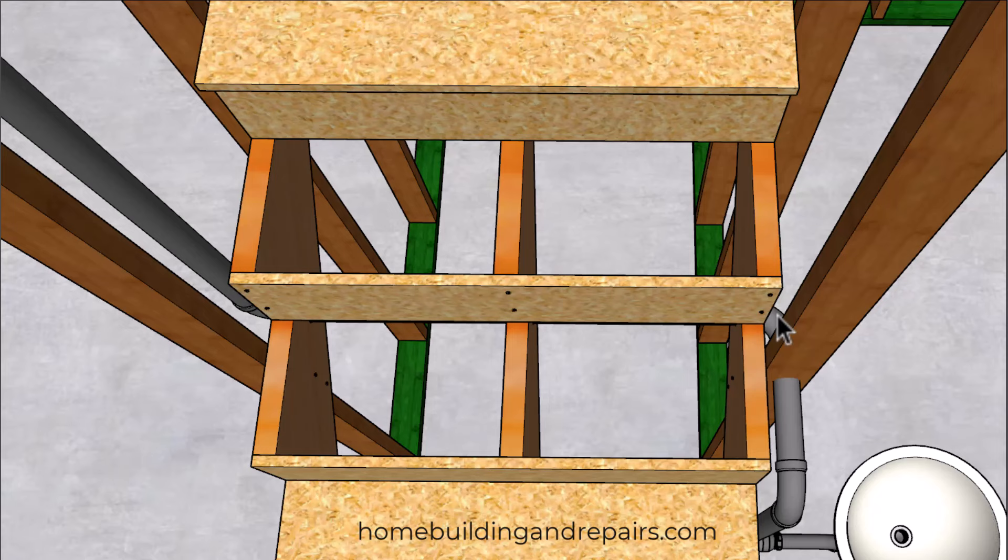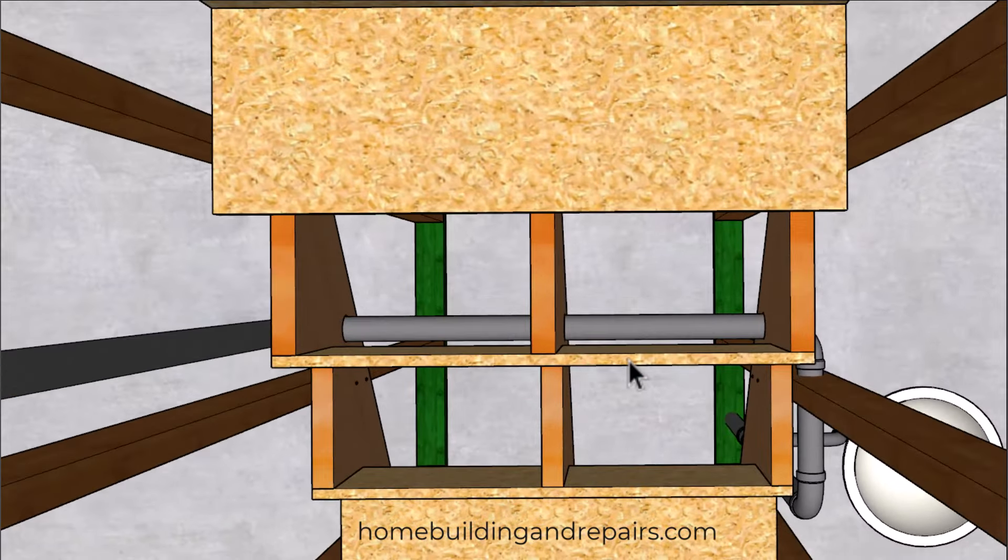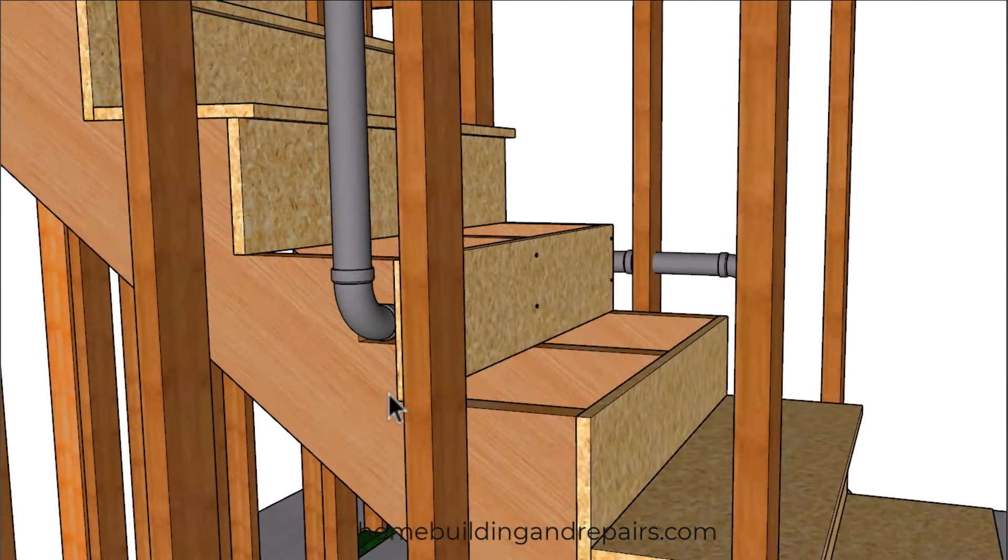Now on a wide stairway this might not work as well but on a stairway that's less than four foot wide these risers are really going to make a big difference. So if you don't install any risers I would strongly suggest to avoid drilling holes through the stair stringers unless you relocate the pipe to where it's in what I would consider to be the non-structural section of the stringer. So here we've located the pipe in the center of the riser height so that we could nail the bottom and the top of the riser.